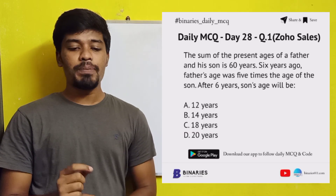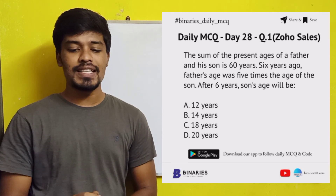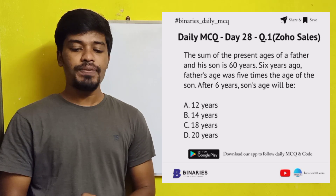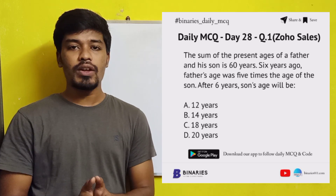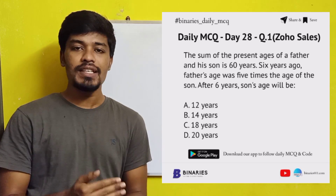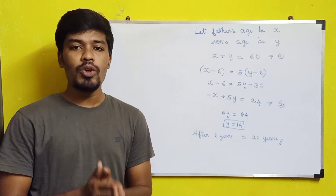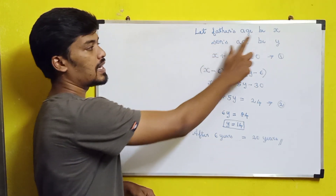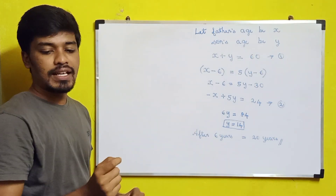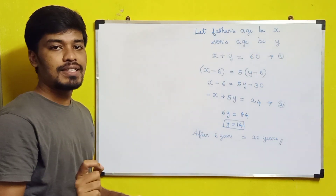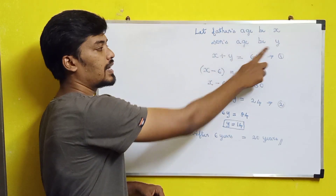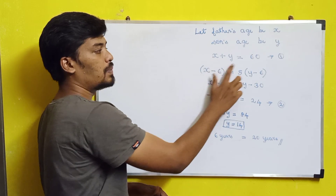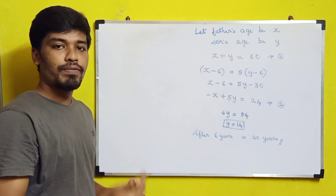The first question is: the sum of the present ages of a father and his son is 60 years. 6 years ago, the father's age was 5 times the age of the son. What will be the son's age after 6 years? We don't know the present ages, so let father's age be x and son's age be y. They say the sum of present ages is 60, so x plus y equals 60. We consider this as the first equation.